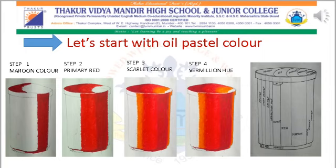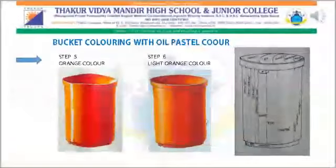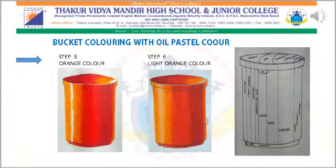Here you can see different shades of the red color. For example: maroon, primary red, scarlet, vermilion, orange, and light orange. These all shades you will merge together properly, and then you will get the three-dimensional effect of that object.